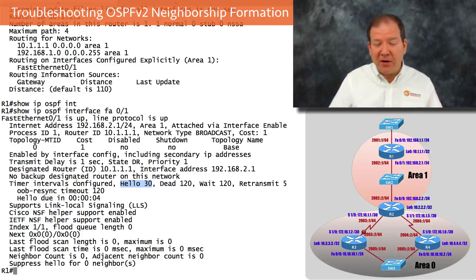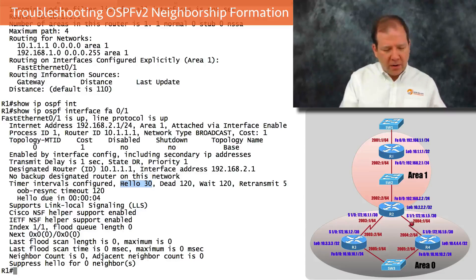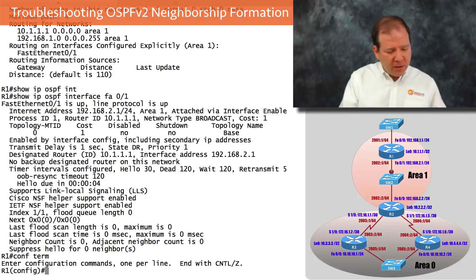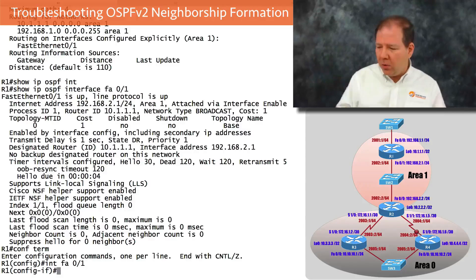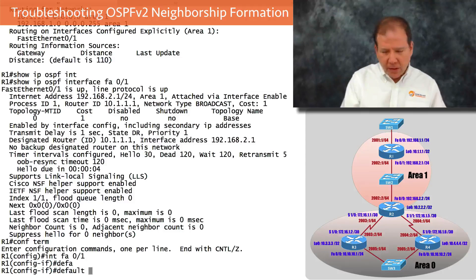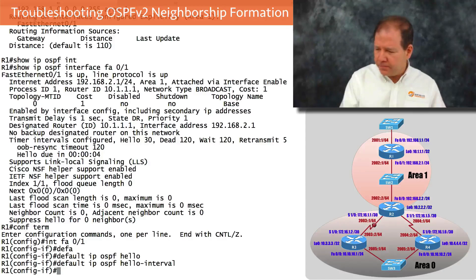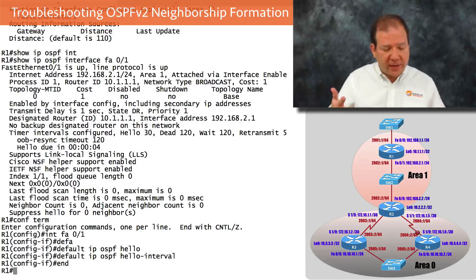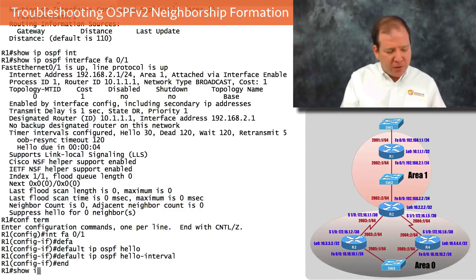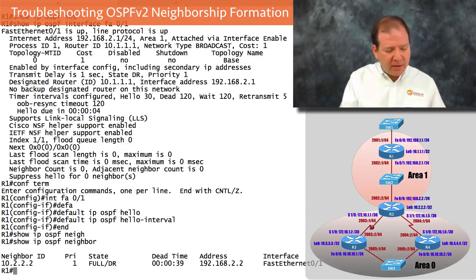Someone must have changed the hello timer on R1. Let's go into interface FastEthernet 0/1 and reset it to the default by issuing 'default ip ospf hello-interval'. After a few seconds, running 'show ip ospf neighbor' confirms great news — we now have a neighborship formed over this link. R1 is now a neighbor with R2.